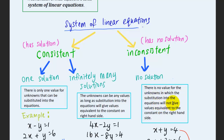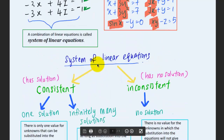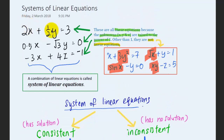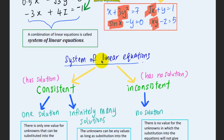For no solution, there is no value for the unknowns where substitution into the equations gives values equivalent to the constant on the right-hand side. This means that when you substitute x and y into the equations, at least one of the equations would not be equivalent to the constant on the right-hand side.